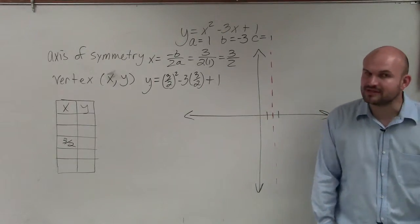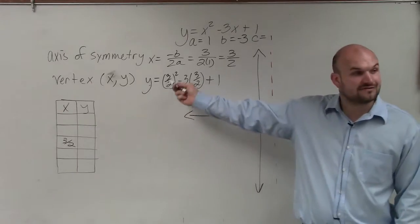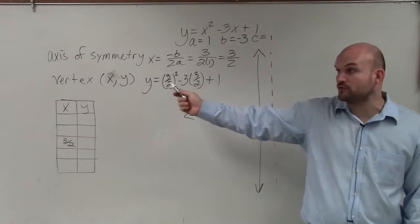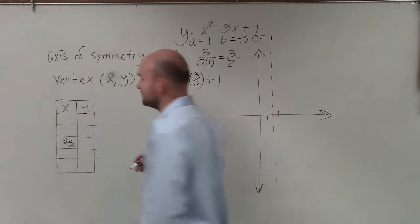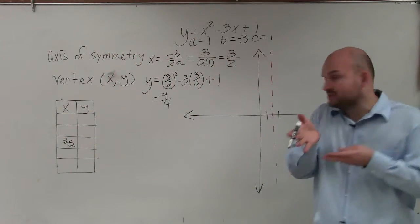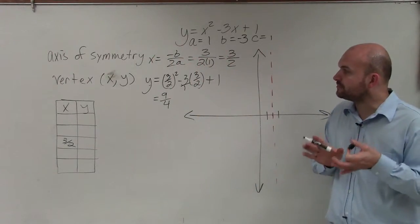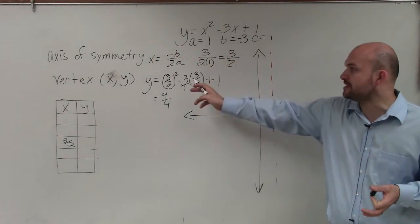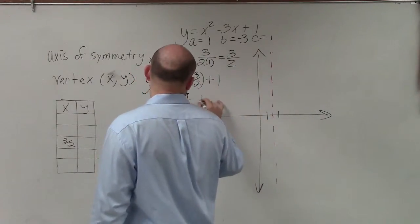Now I know you guys do not like fractions. But ladies and gentlemen, we have talked about fraction operations in this class. 3 halves squared just means 3 squared over 2 squared, which is just going to leave us with 9 fourths. When we multiply a whole number times a fraction, we rewrite our whole number as a fraction. So negative 3 over 1 times 3 halves is going to become negative 9 halves plus 1.